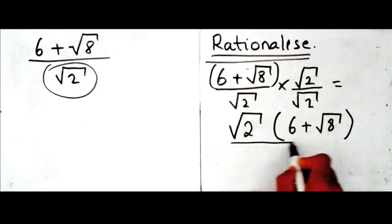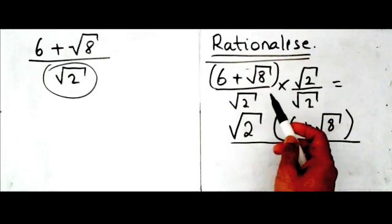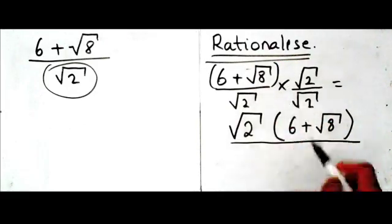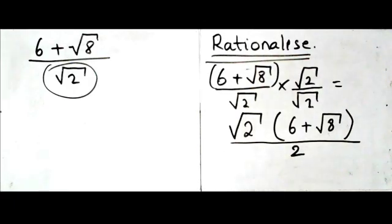And at the bottom, I have root two times root two. And we've just seen before that root two times root two is equal to two.